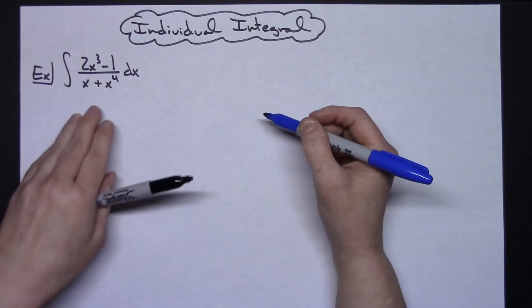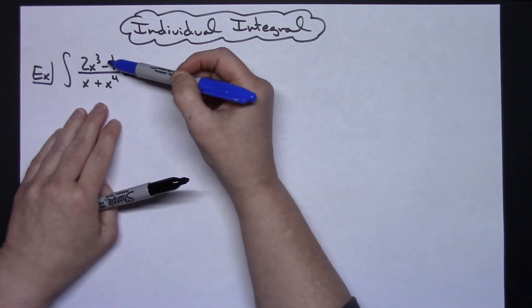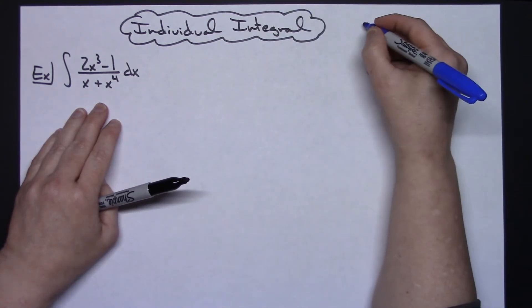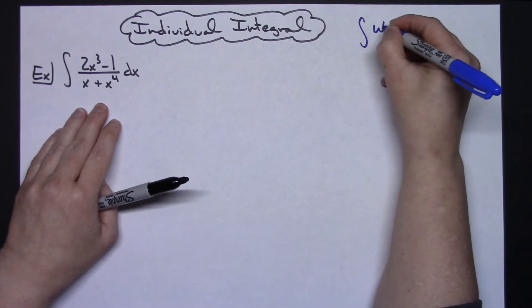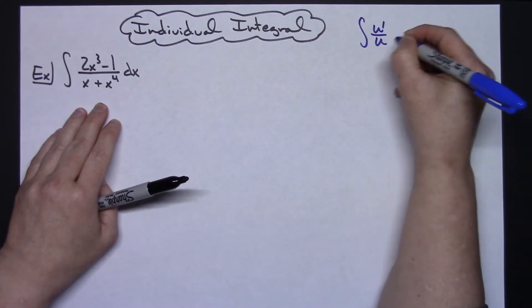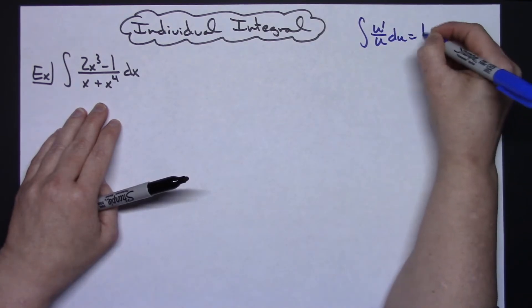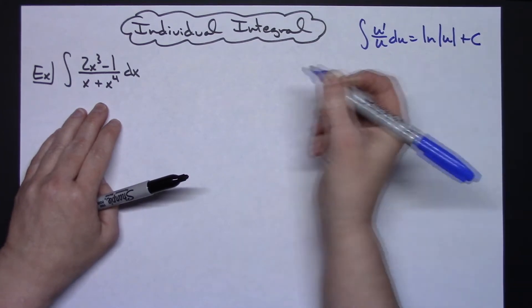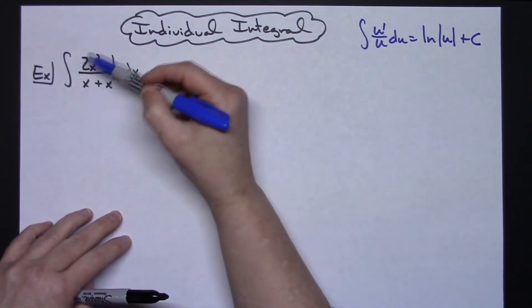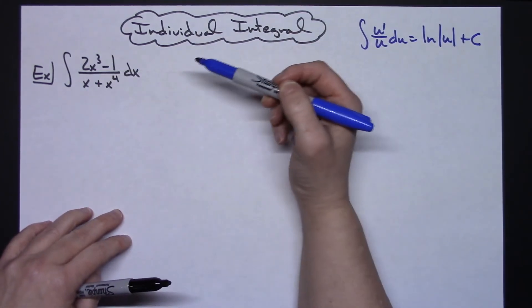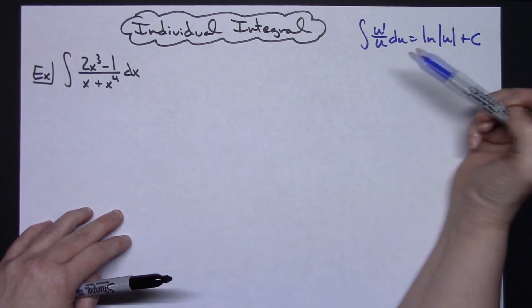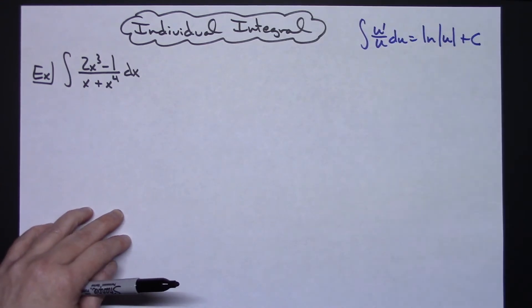We're going to recall that when the numerator is the derivative of the denominator, then we can integrate it pretty easily, because the integral of u prime over u is equal to the natural log absolute value of u plus c. So that's what I want to try to do — manipulate this so that I can get the derivative on top and the original function on the bottom, and then integrate it pretty easily.